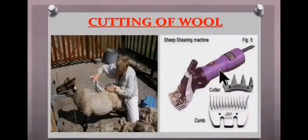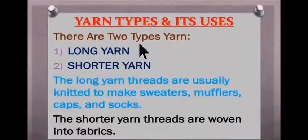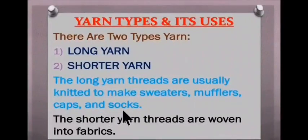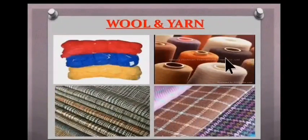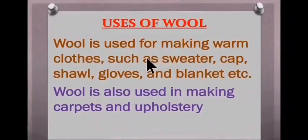This is the picture of the modern machine or shaver by which shearing is done. There are two types of yarn: long yarn and shorter yarn. Long yarn threads are usually knitted to make sweaters, mufflers, caps and socks. Shorter yarn threads are woven into fabrics. Wool is used for making warm clothes such as sweaters, caps, shawls, gloves and blankets. Wool is also used in making carpets and upholstery.